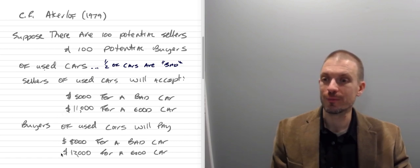What about for good cars? Well, the buyer would pay $12,000, the seller would accept $11,000. So there's $1,000 of economic surplus to be bargained over between those two types of buyers.